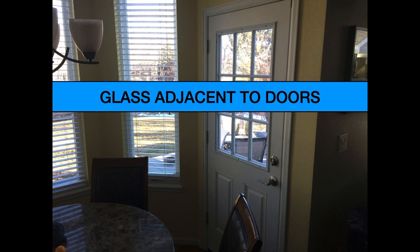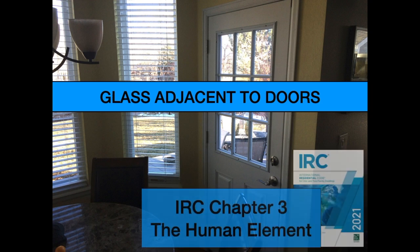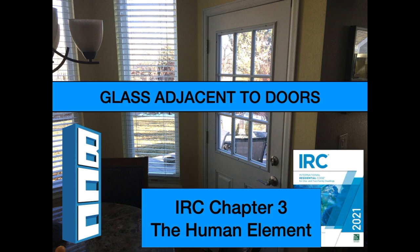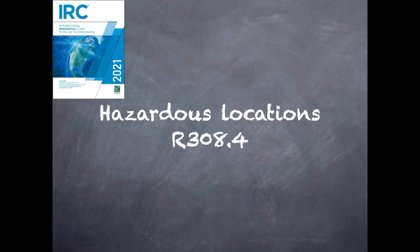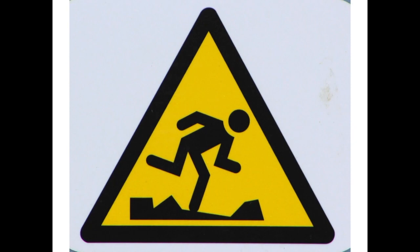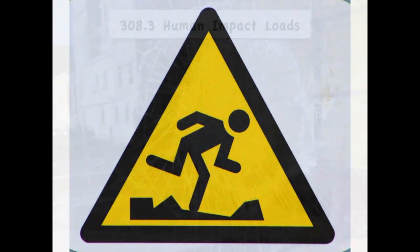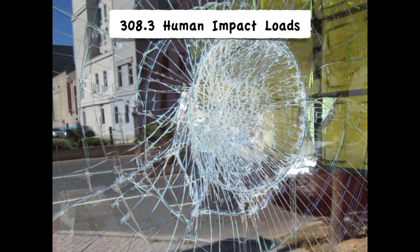Did you know there are building code requirements for safety glass in glass that's adjacent to doors? Here are some clips from my on-demand course, IRC Chapter 3: The Human Element, that'll tell you all about it. Available only at buildingcodecollege.com. The 2021 International Residential Code details seven locations in Section R308.4 where there's a higher probability someone will stumble and fall into or through nearby glass. These locations require safety glazing, and here's a clip about one of them.